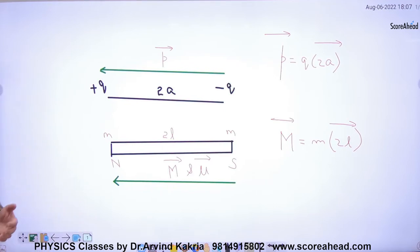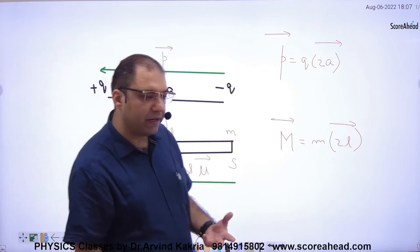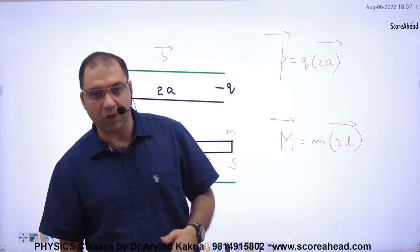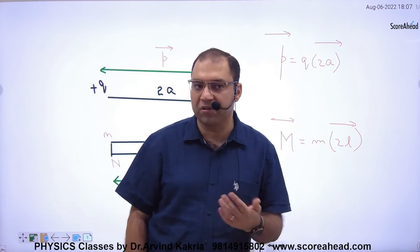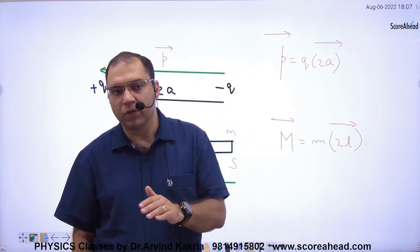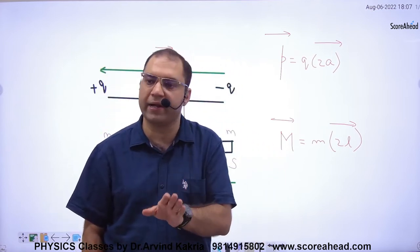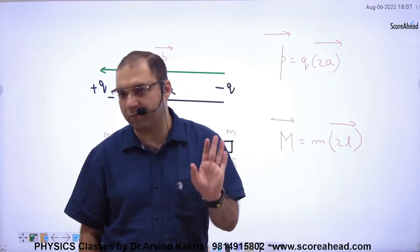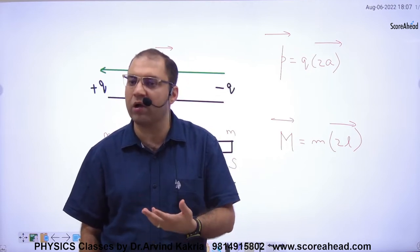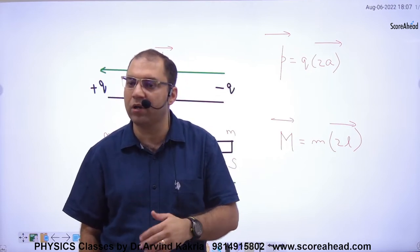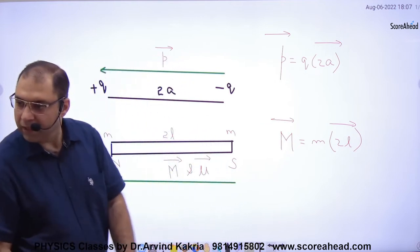Wherever there is a magnetic field, wherever there are north and south poles — equal and opposite poles, m and m — separated by a very small distance, that is a magnetic dipole. And every magnetic dipole has a magnetic dipole moment. That is the first point.